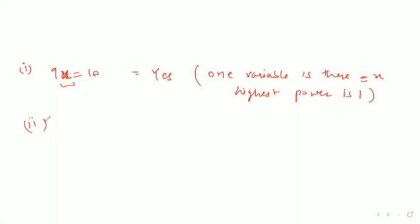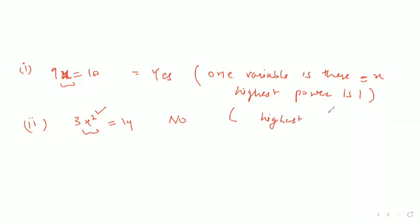Second part: 3x² = 40. Is it a linear equation in one variable? No, it is not a linear equation in one variable. Of course only one variable is there, but it has the highest power of 2. So the answer is no, because the highest power is 2.